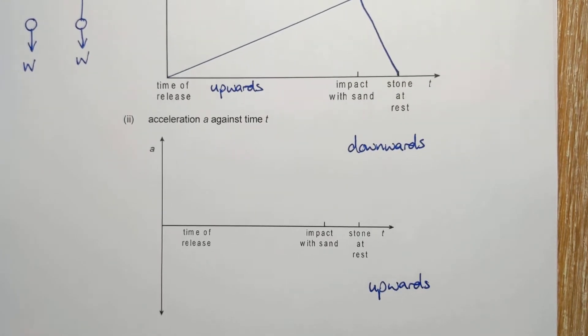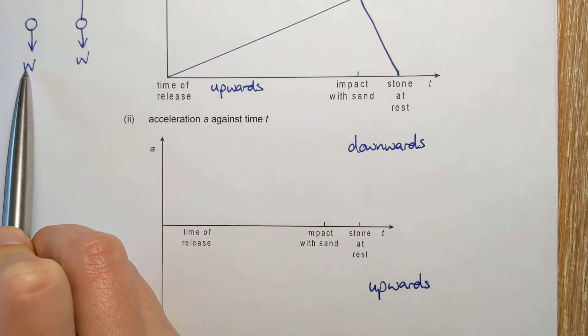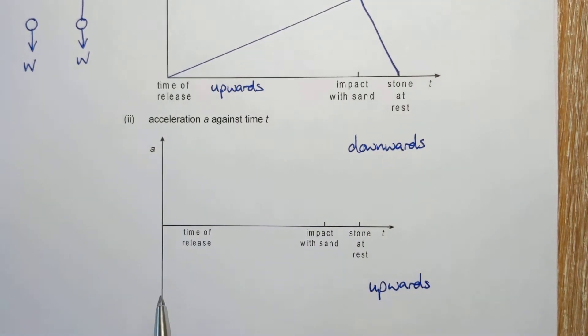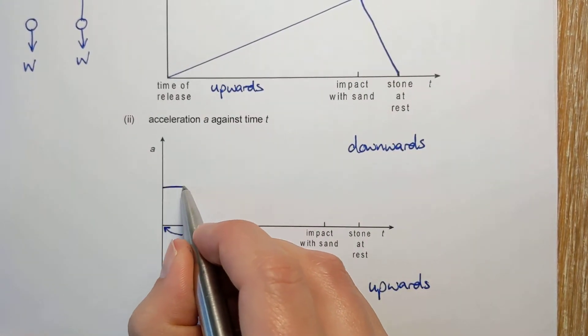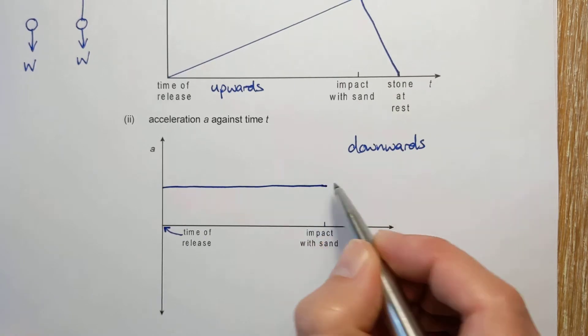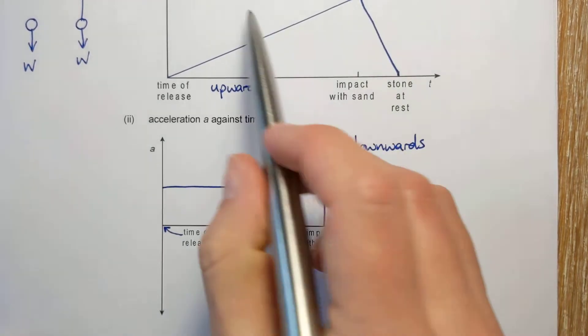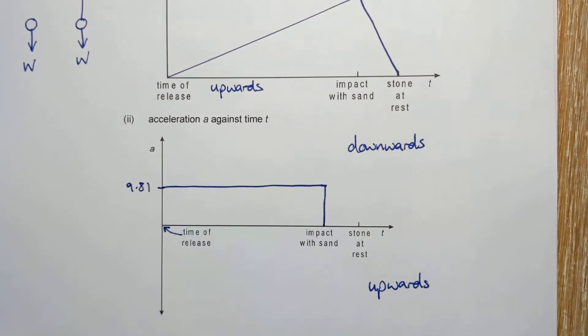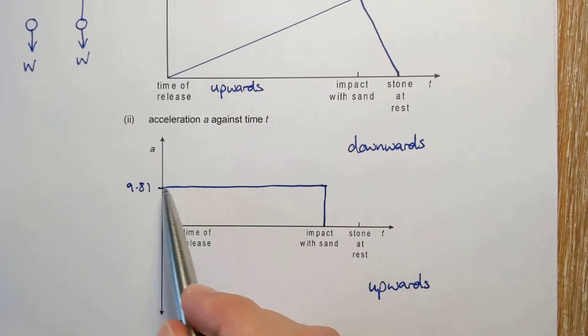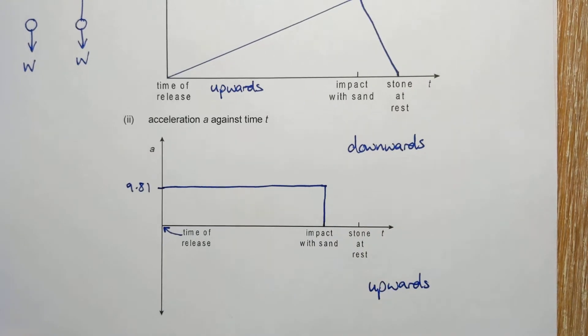And now for acceleration. Well, we said constant acceleration until it hits the ground. So I'm not sure what's going on here. I'm going to assume time of release is actually there again. So it's constant all the way until it hits the ground. Now, I don't have to put numbers on. It said numerical values not required, but just while we're here it's 9.81 all the time until it hits the ground.